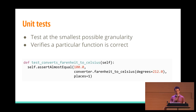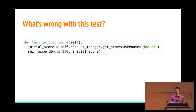If this is ever not true, it means that something drastic has happened in the world of standard measurements, or more likely, you broke your code and you need to fix it. Here's an example of an anti-pattern I see a lot with people who are really good at writing code but not so experienced at writing test code. We're testing a class called Account Manager. We're calling self.accountManager.getScore for the user Joe123, getting the initial score, and making sure the initial score is 150.